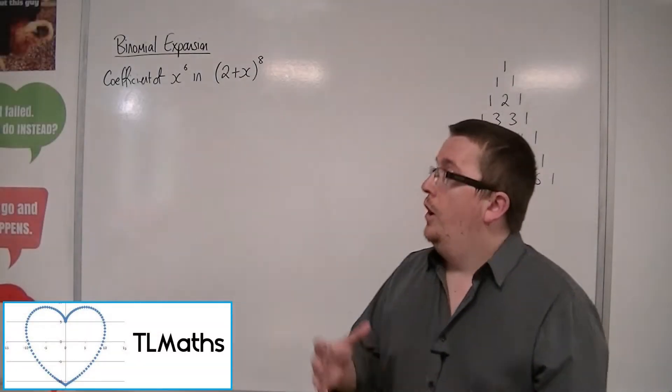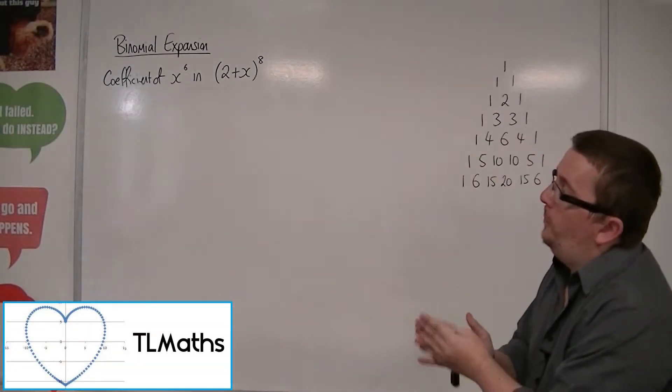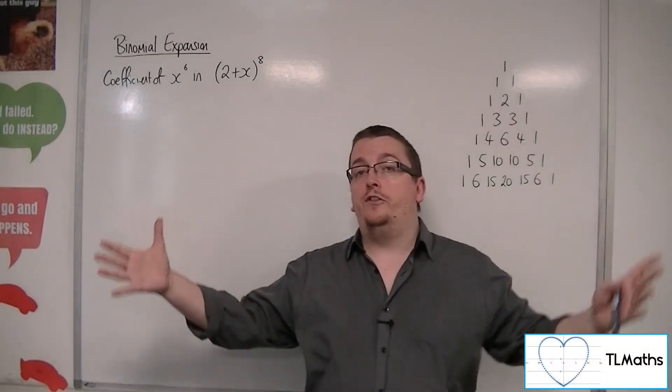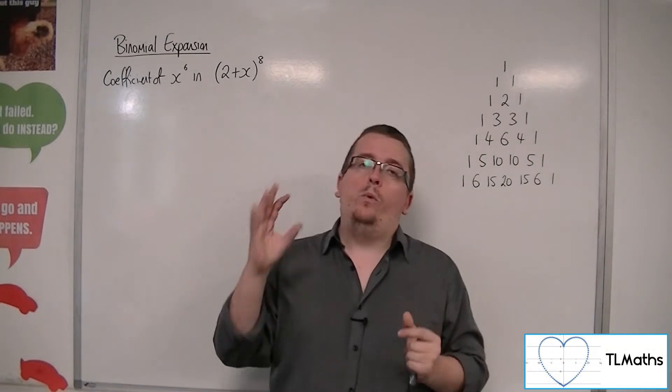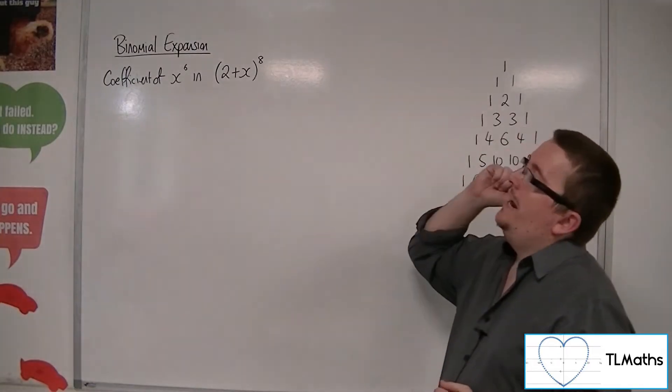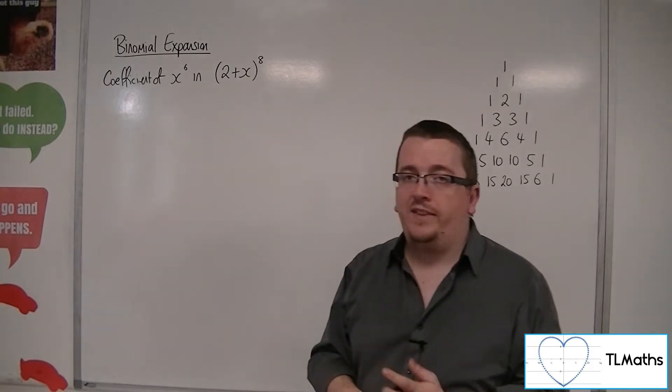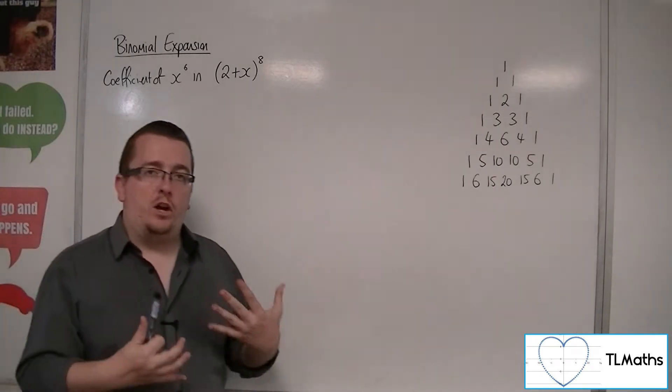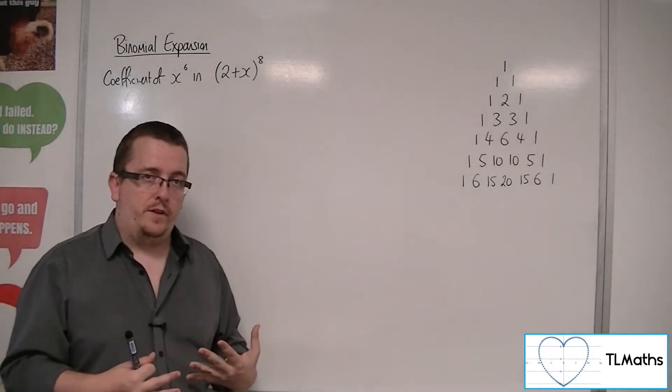In this video, we're going to try and find a specific coefficient. Rather than expand the whole thing, we want to find the number that is actually in front of the x to the 6 in the expansion of 2 plus x to the 8. Can we do it without having to go through the full expansion?